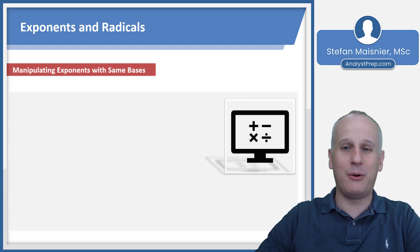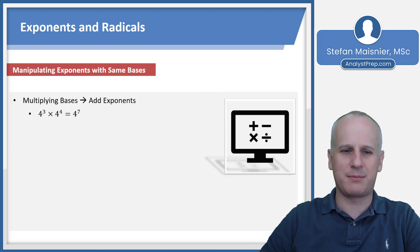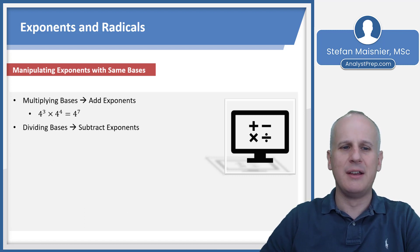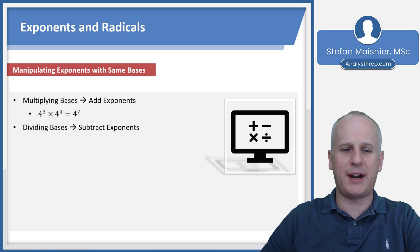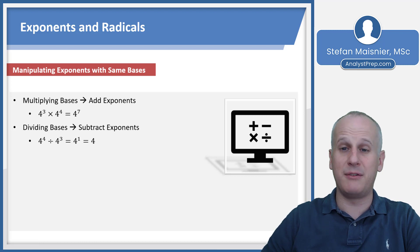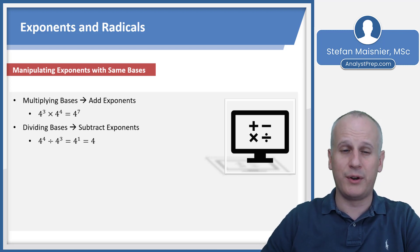When multiplying bases with the same base, you add the exponents. So 4 to the 3rd times 4 to the 4th equals 4 to the 7th, because 3 fours multiplied together times 4 fours gives you 7 fours multiplied together. When dividing the bases, you subtract your exponents. So 4 to the 4th divided by 4 to the 3rd equals 4 to the 1st, because 3 of the 4s in the denominator cancel out 3 in the numerator, leaving just 1 four.